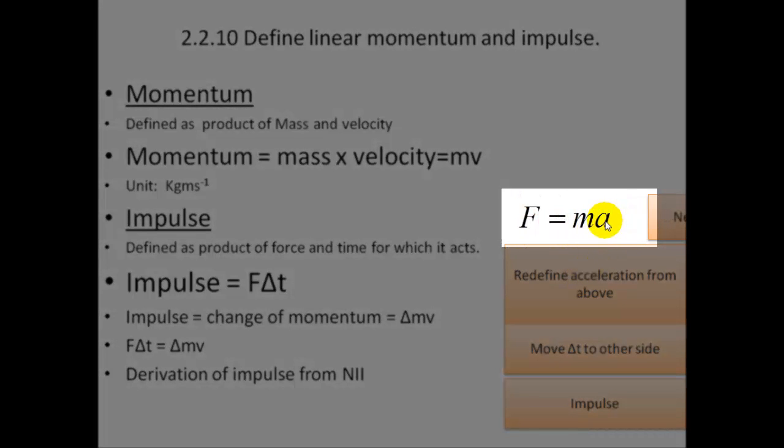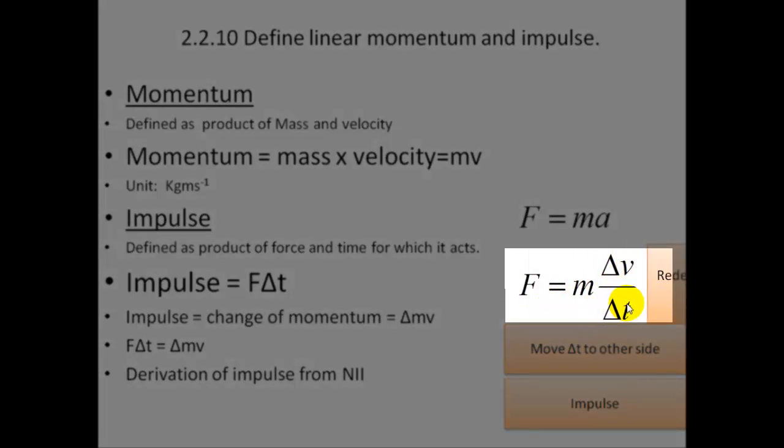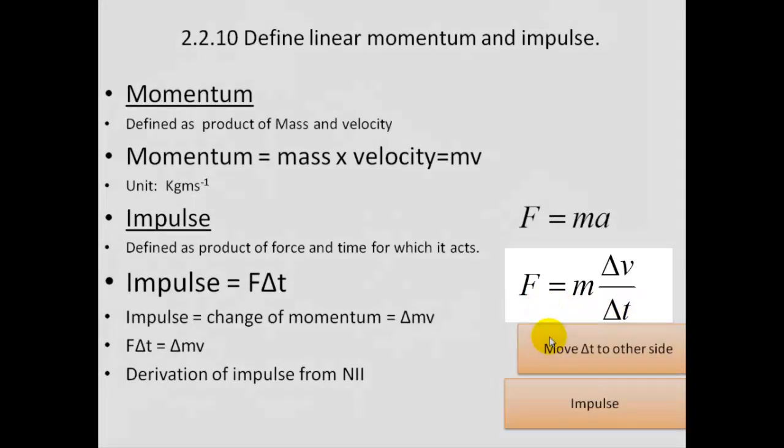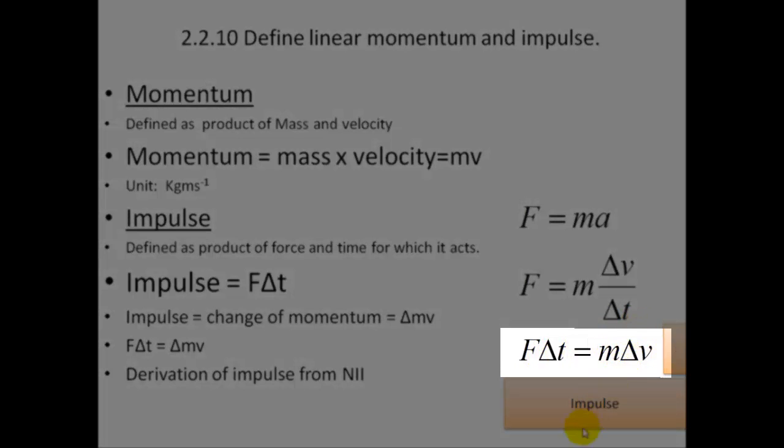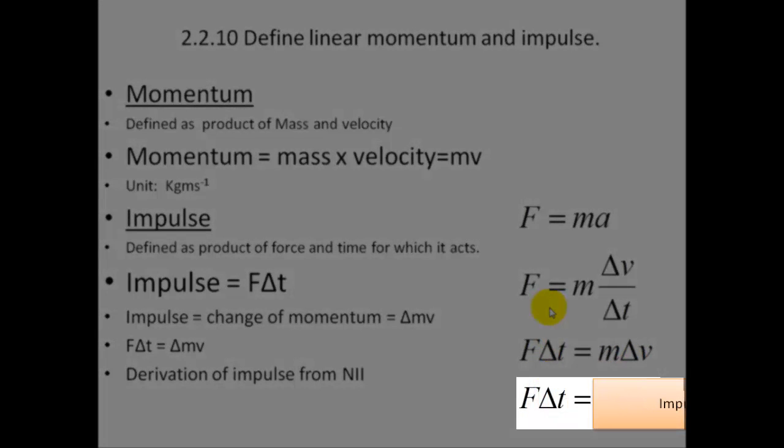Now we redefine acceleration. Acceleration is the change of velocity divided by the time. F is equal to M times change of velocity divided by time. Let's take this ∆t and move it to this side. We have F∆t is equal to M∆V. M∆V is basically the mass times velocity, the change of momentum. So that will be the impulse. So that's impulse derived from Newton's second law.